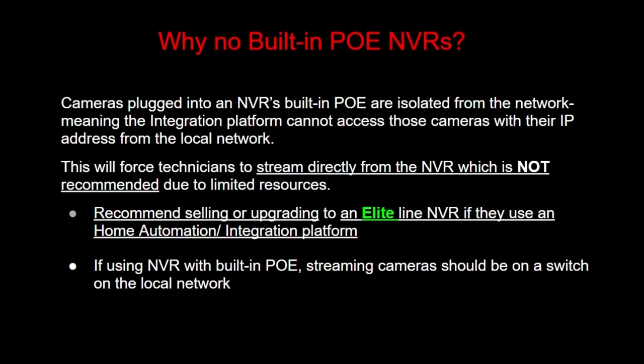So what does this mean? It means that cameras plugged into an NVR's built-in PoE and co-ac systems are not recommended when streaming over the network. Cameras plugged into an NVR's built-in PoE are isolated from the network, meaning the integration platform cannot access those cameras with their IP address from the local network. This will force technicians to stream directly from the NVR, which is not recommended due to limited resources. We recommend selling or upgrading to an elite-line NVR if they use an automation system or integration platform. If you're using an NVR with built-in PoE, the streaming camera should be on a switch on the local network.